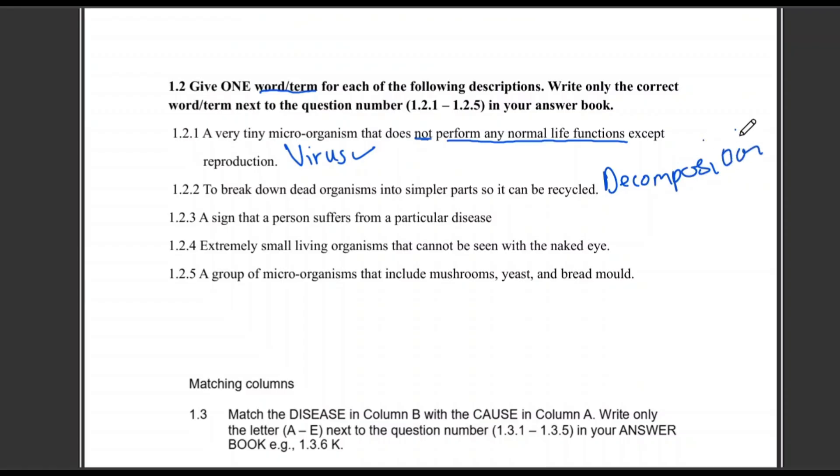A sign that a person suffers from a particular disease - that is considered a symptom. Extremely small living organisms that cannot be seen with the naked eye - that is microorganism. A group of microorganisms that include mushrooms, yeast, and bread mold - that group is known as fungi or fungi.